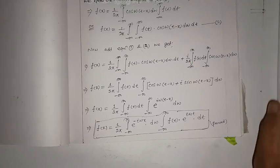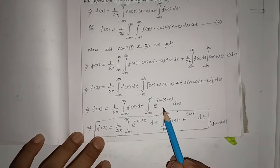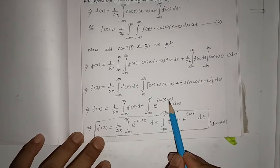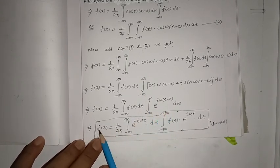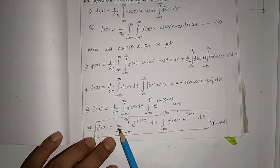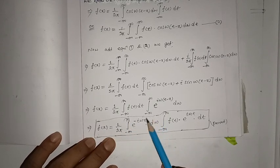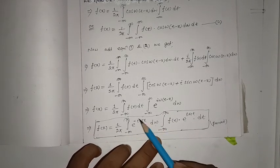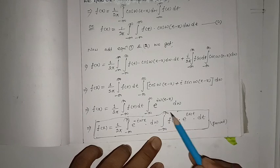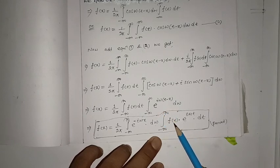Taking e to the power minus i·ω·x outside, f(x) equals one by two pi, integral minus infinity to plus infinity e to the power minus i·ω·x dω, times integral minus infinity to plus infinity f(t) e to the power i·ω·t dt. Hence proved — this is the representation of the Fourier complex integral of a function f(x).